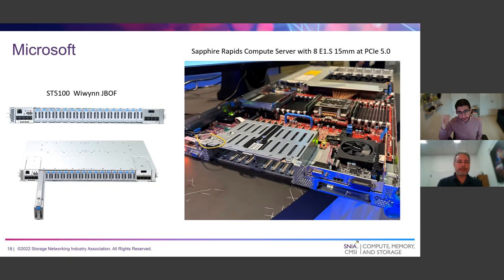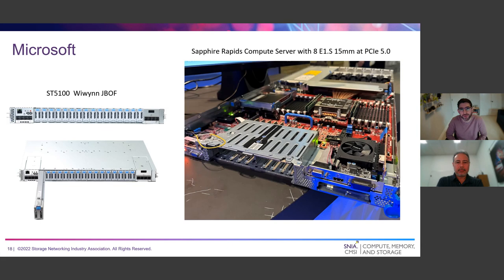Microsoft had been using the 18 millimeter E1.L and has since moved to 9.5 millimeter E1.L, which is standard for high-capacity QLC designs. Compared to U.2 in a high-capacity design for a JBOC or dense storage applications, E1.L offers better capacity, better utilization, and better thermals versus U.2. So that's really important if you want the maximum amount of storage in the smallest space possible — E1.L is always going to be superior.